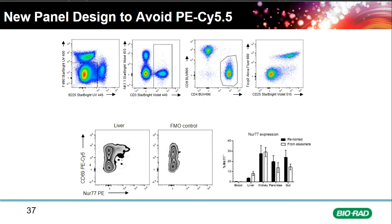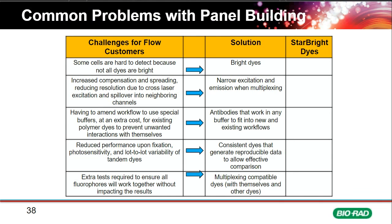Returning to the common panel building challenges: you need bright dyes — Star Bright dyes are bright. You need narrow excitation to avoid compensation and spreading — Star Bright dyes have narrow excitation and emission. You need dyes that work in any buffer without changing existing workflows — Star Bright dyes do that. You need consistent, reproducible data for effective comparisons over time — Star Bright dyes deliver that. And you need confidence in multiplex compatibility — Star Bright dyes have been shown to work in large multi-color panels.